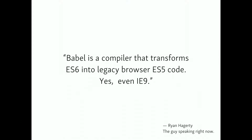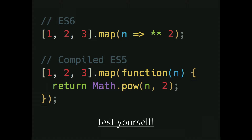Babel is a compiler that transforms ES6 into legacy browser ES5 code. You can write ES6 and it'll even work in IE9, which is pretty awesome. If you go to Babel's website, they have an example area where you can write ES6 and see what it compiles into — including the exponent operator and arrow functions compiling into regular functions using Math.pow.